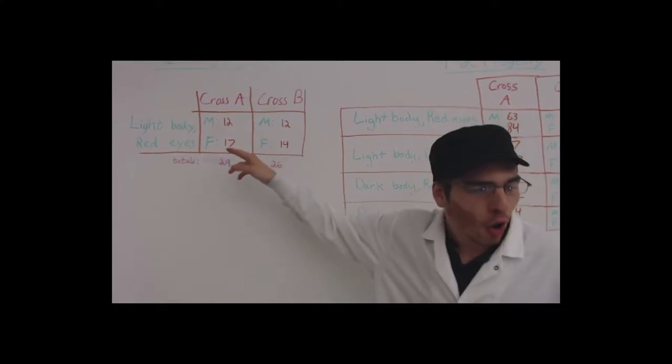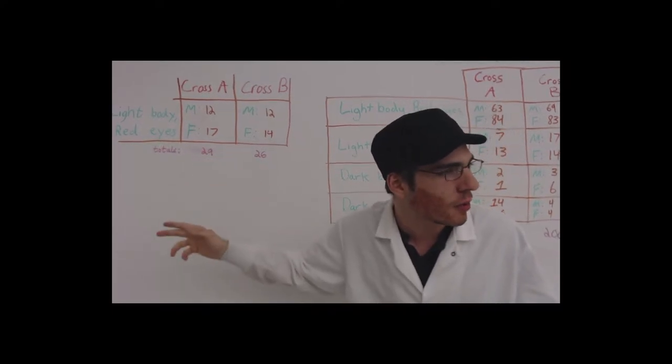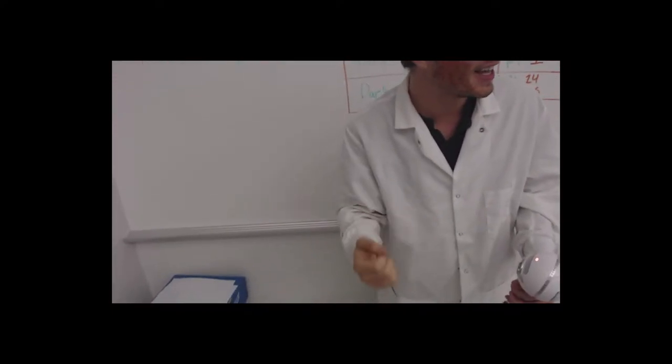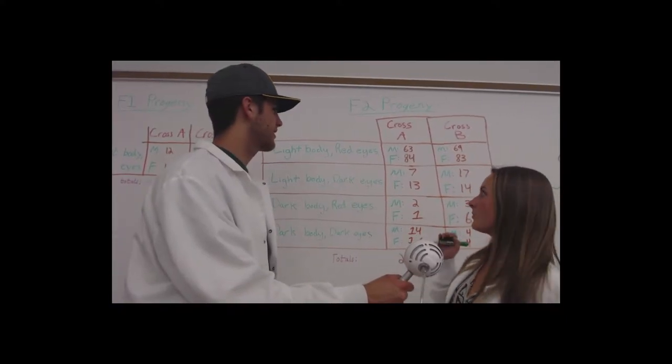Isn't that just interesting though? I mean they all have the same phenotype and that tells you that it's autosomal. Is this making sense? I want you to get this. I really want to know more about your F2 progeny.